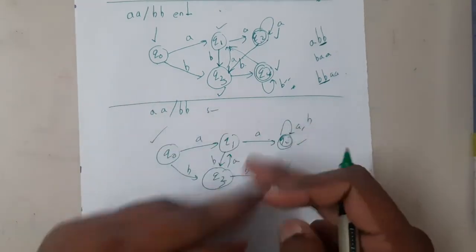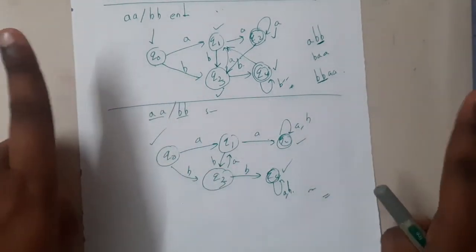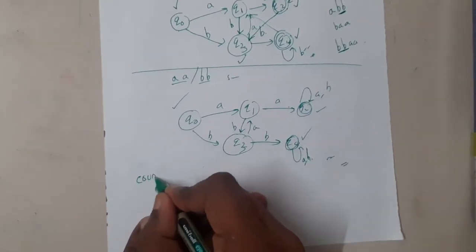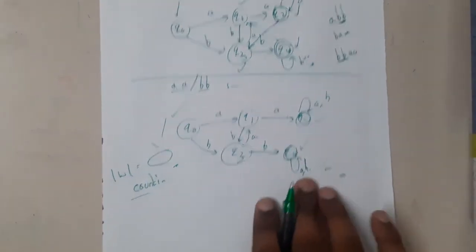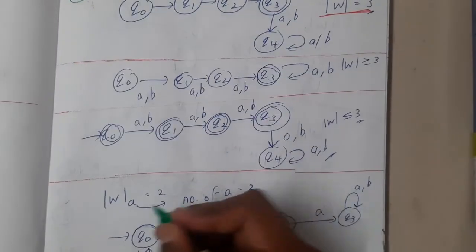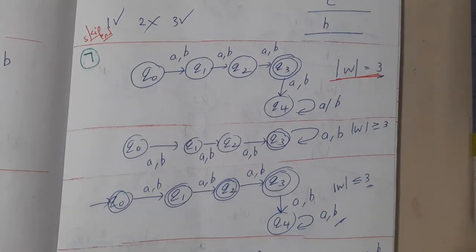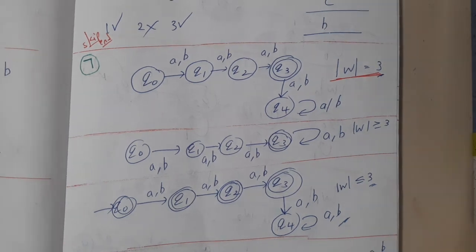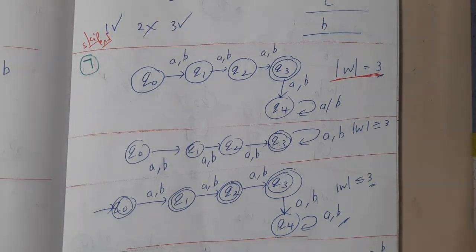I hope everyone got a clear idea with respect to substrings, starting and ending with two different patterns — 'aa' and 'bb' are two patterns. In the first lecture we solved them separately; now we combined them. In the next lecture we will work with counting — how to count the length of a string and based on that length how to accept it. We will discuss length exactly equal to three, greater than or equal to three, less than or equal to three, and even individual character lengths like 'length of a should be two'. Thank you — like, share, and subscribe for more videos.